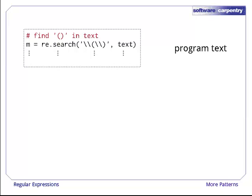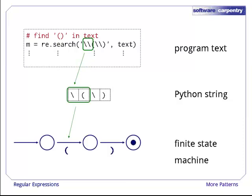When Python reads that file in, it turns the two-character sequence backslash backslash into a single literal backslash character in the string in memory. That's the first level of escaping. When we hand the string backslash open parenthesis backslash closed parenthesis to the regular expression library, it takes the two-character sequence backslash open parenthesis and turns it into an arc in the finite state machine that matches a literal parenthesis.